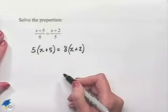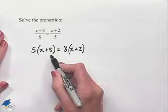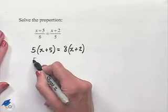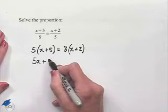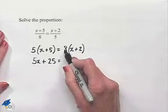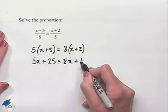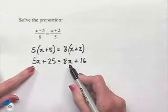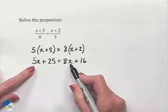Now let's use the distributive law of multiplication over addition in order to simplify each side. 5 times x gives us 5x, plus 5 times 5 is 25. On the right hand side, 8 times x is 8x, plus 8 times 2 is 16. We notice that we have a variable expression on both sides of the equation.